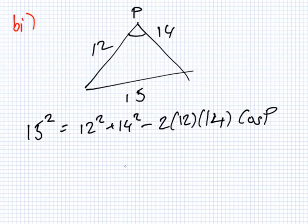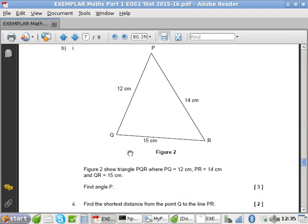So when I solve this, let's try that again. 15 squared minus 12 squared minus 14 squared divided by minus 2 times 12 times 14, cos inverse. So I get, oh my goodness, I'm in radian mode. I think we're using degrees here.